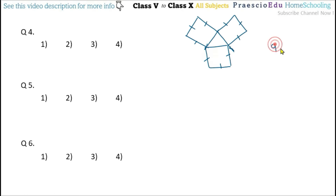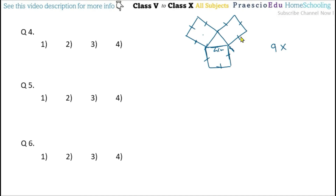There are 9 sides to add, and each side is 4 centimeters because 4 cm is given and as per the symbols all sides are equal. So 9 × 4 = 36 centimeters is the perimeter, because in perimeter we do not count internal sides — only boundary lengths. 36 centimeters is given in option number 3.